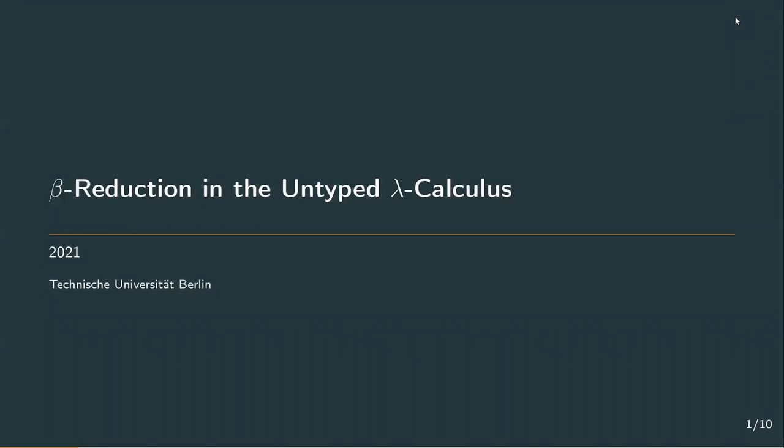Hello and welcome back. In the last video, we introduced the untyped lambda terms consisting of variables, applications, and abstractions. In this second video of chapter 1, we want to discuss computation in the lambda calculus, which will be done via beta reduction, and analyse what a result of a lambda term might be.